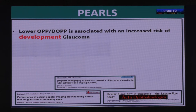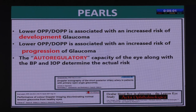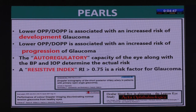The take-home: lower ocular perfusion pressure — particularly diastolic ocular perfusion pressure — is associated with increased risk of glaucoma development and progression. The autoregulatory capacity of the eye, along with blood pressure and IOP, together determine the actual risk. A patient may be hypertensive but have good autoregulatory mechanisms and may not develop glaucoma. A resistive index greater than 0.75 is definitely a risk factor.